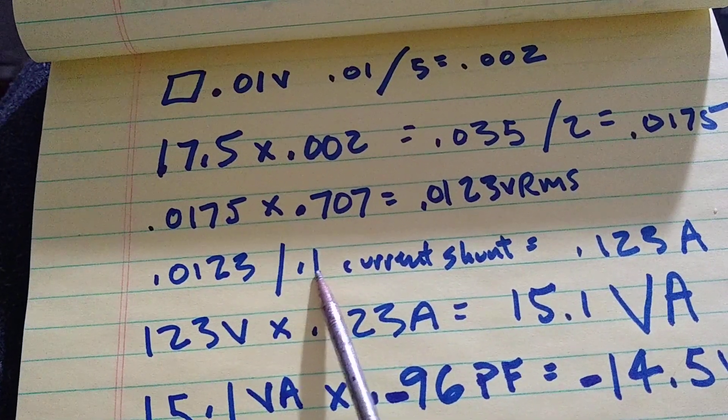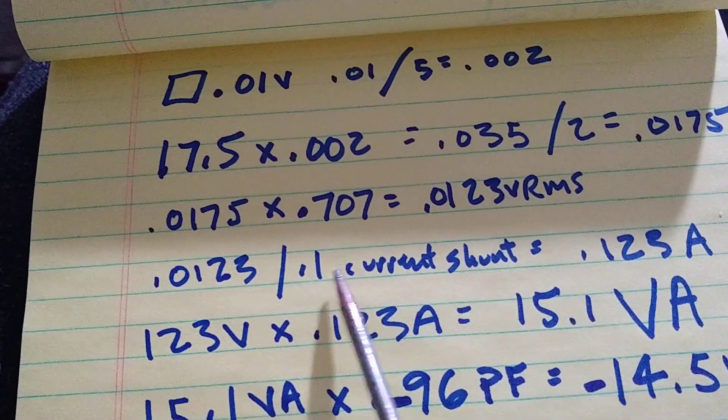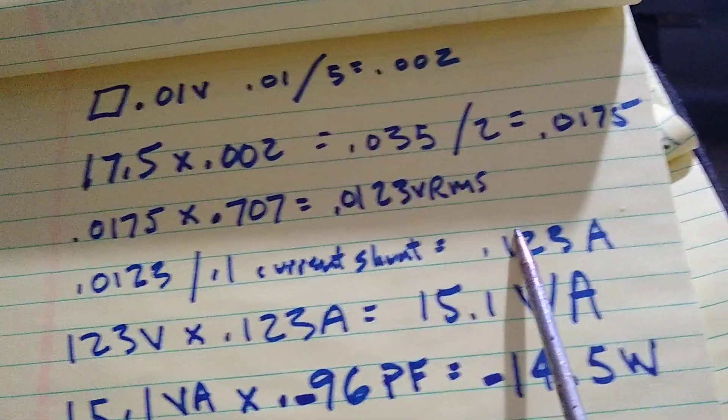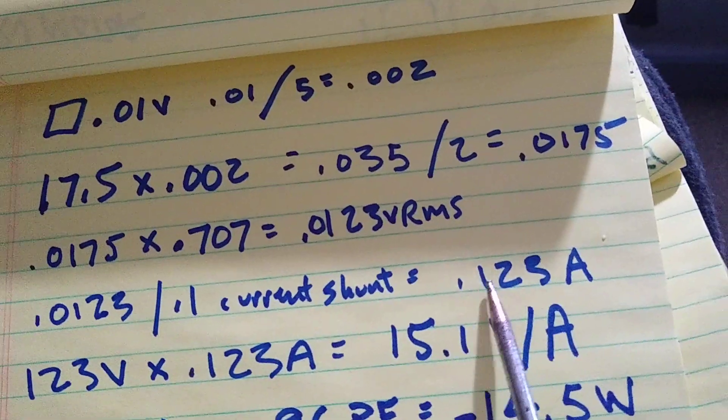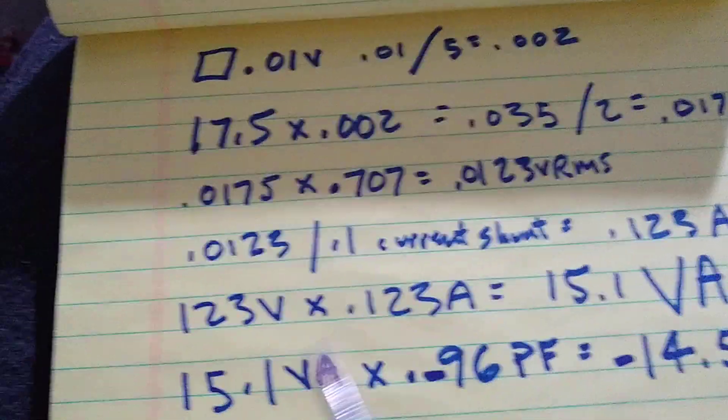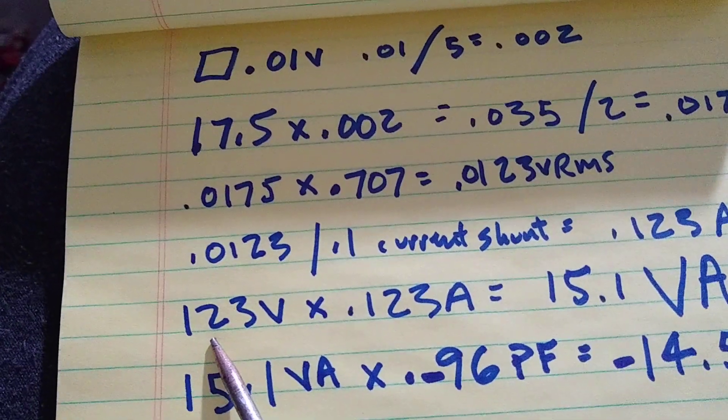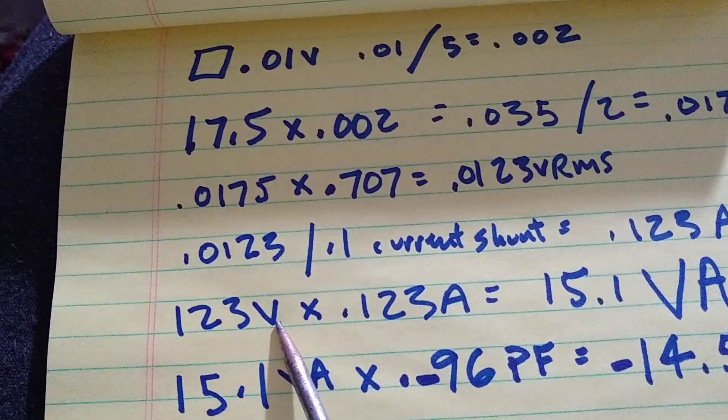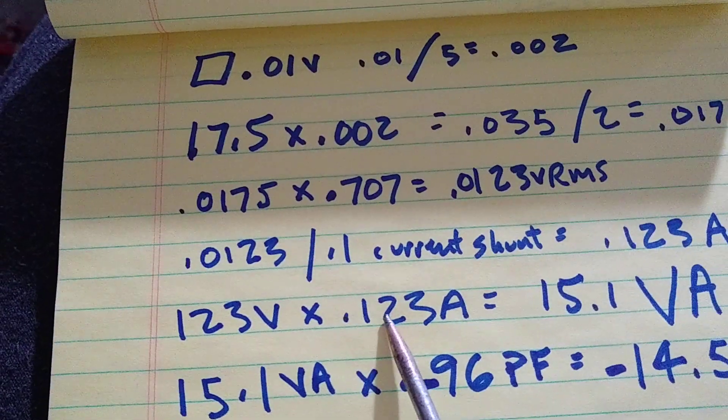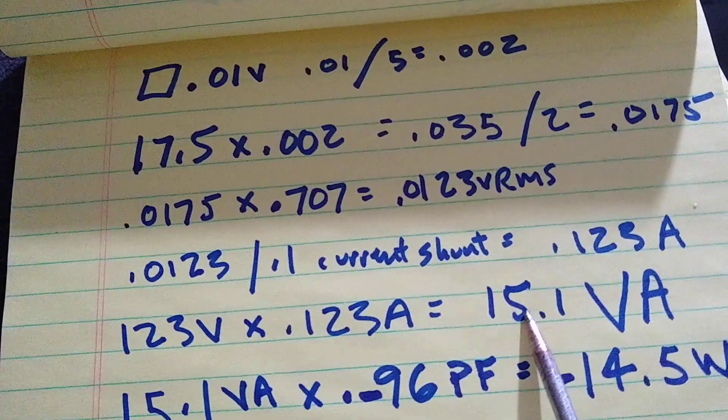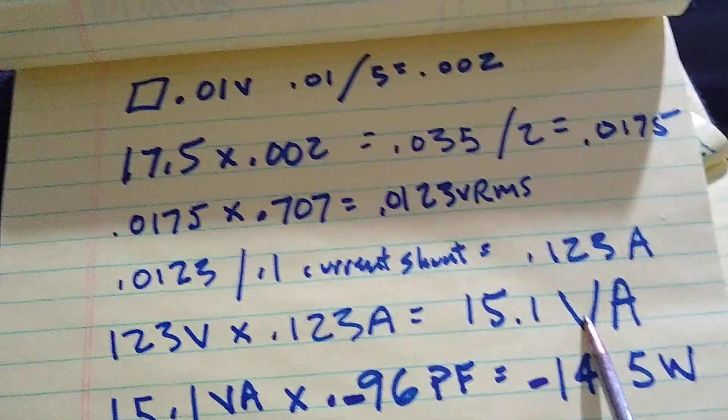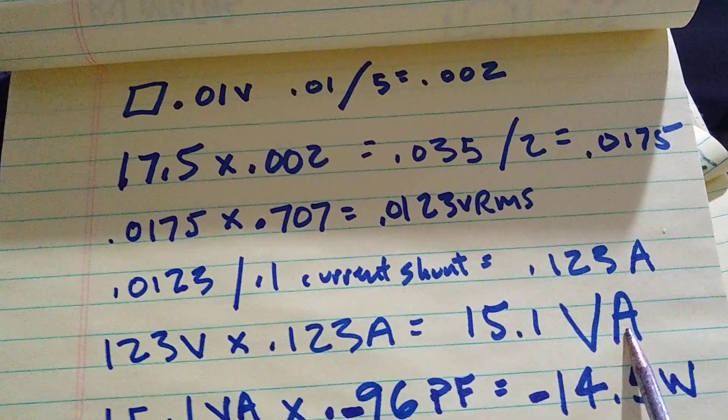And that comes to 0.0123 volts RMS. And then you divide that by the current shunt, which is a 0.1 ohm resistor. And you have the amperage, 0.123 amps. Just happens to be 123 volts going in. 123 times 0.123 amps gives you 15.1 volt-amps, not watts.